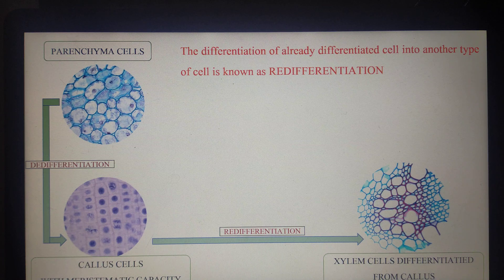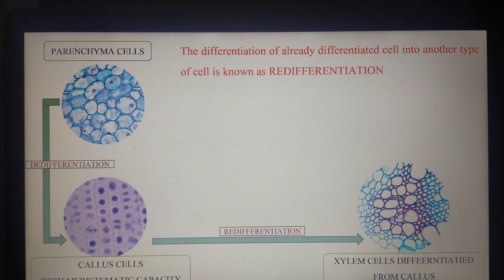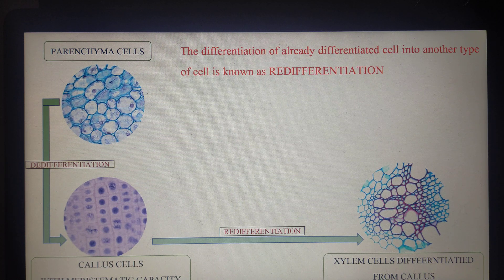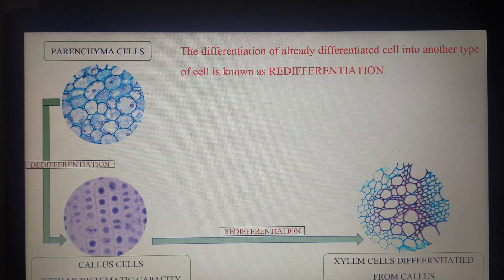All four concepts — totipotency, differentiation, de-differentiation, and re-differentiation — are the four pillars that support PTC. In today's class we discussed the concept of PTC, its definition, who is called the father of plant tissue culture (Gottlieb Haberlandt), and the four basic concepts of PTC. Hope this session was useful — let us meet in the next episode. Thank you.